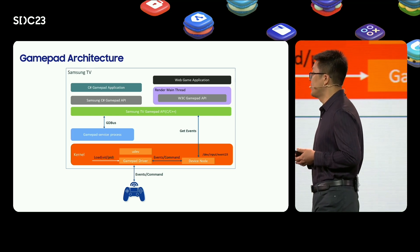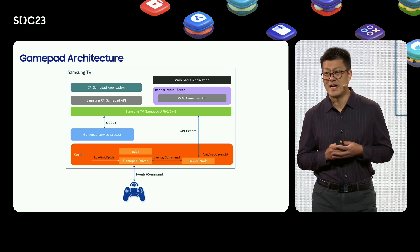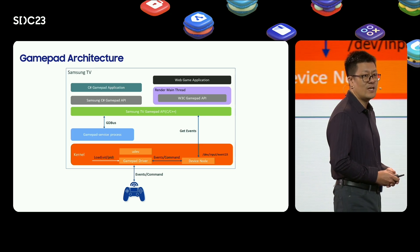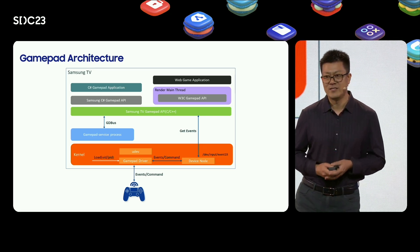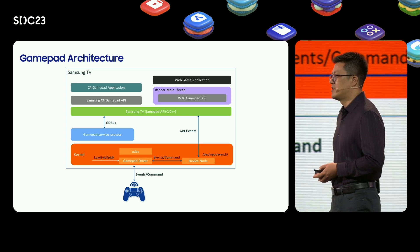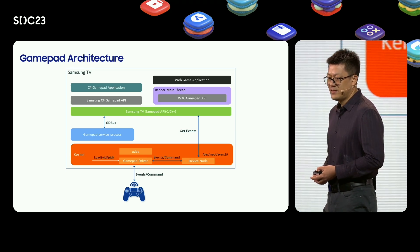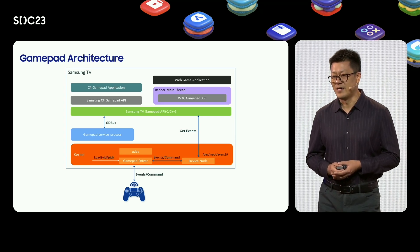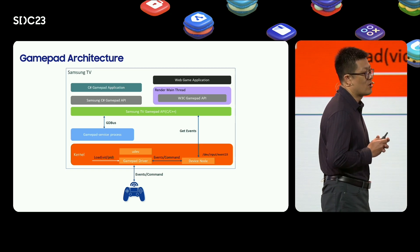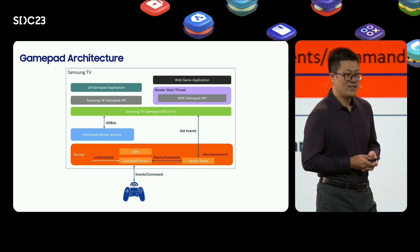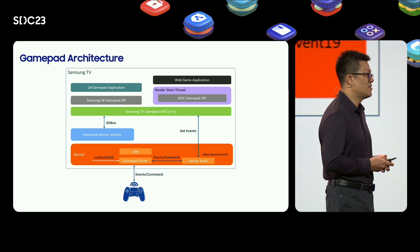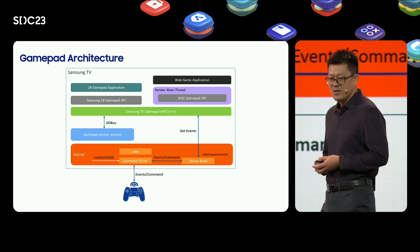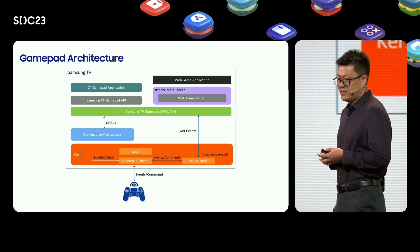This is the current gamepad architecture on Tizen TV. From the figure, you can see we support two types of game applications: web and C-Sharp. There is also a background gamepad service that runs constantly, responsible for monitoring gamepad connection and disconnection events, and dispatching gamepad device information to the gamepad API through GDBOS. Both C-Sharp gamepad API and W3C gamepad API are based on gamepad API. Once a gamepad is connected, the kernel loads the corresponding gamepad driver based on the gamepad's VID and PID. When a gamepad button is pressed, the gamepad driver reports the button events to the device node. The application then detects the events through the gamepad API.